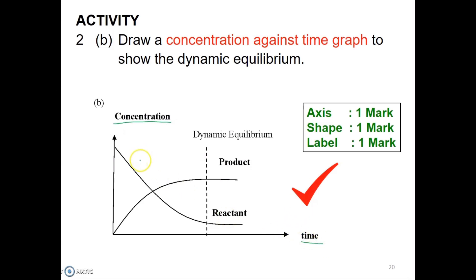The shape of the graph will give you one mark. The correct shape means that the concentration of reactant must decrease over time and the concentration of product must start from zero initially and increase over time.